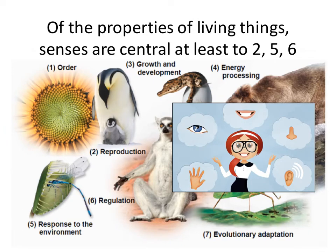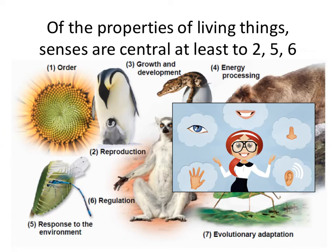Here are all of the properties of living things — you probably got this in one of the other classes. Of these seven different requirements for something to be classified as a living organism, you have to have senses to do at least three of them. Senses are kind of critical. It would be sad not to have any of our senses — not to be able to smell, taste, touch, etc. To be able to adapt, to be able to regulate, to be able to reproduce, and especially to be able to respond to the environment, we have to be able to sense.